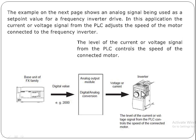In this way, the analog output modules in the MELSEC FX family are used to control the speed of different devices such as motors and counters. You can change the speed of various devices by using the digital-to-analog converter module at the output of the PLC. Thanks for watching this video.